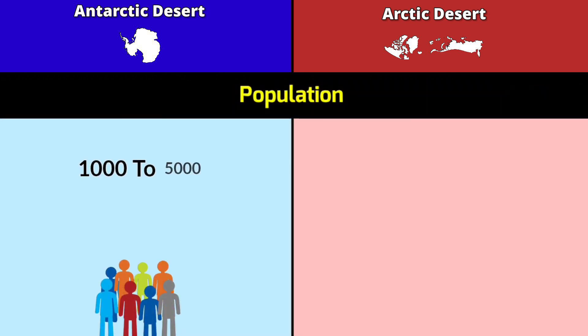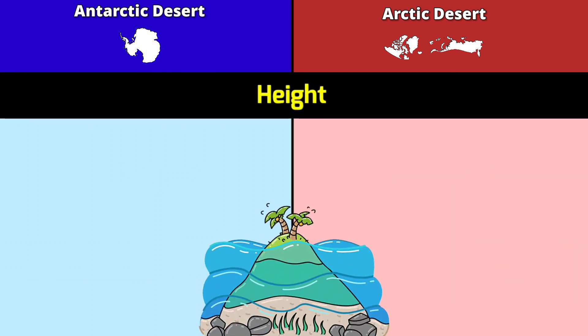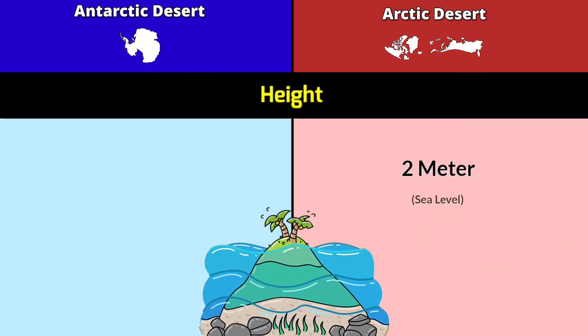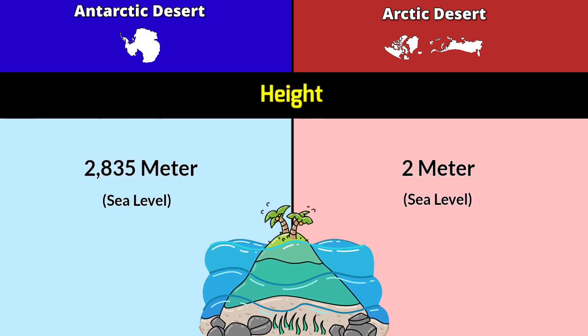Population: Antarctica Desert has 1,000 to 5,000; Arctic Desert has 1 million. Height: Antarctica Desert is up to 2 meters above sea level; Arctic Desert is 2,835 meters above sea level.